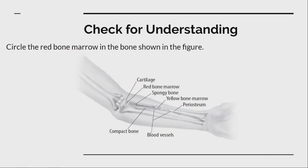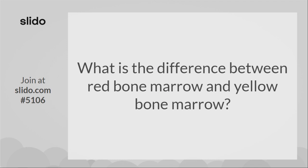This is in the packet — if you want to follow along, it's asking you to circle the red bone marrow and the yellow bone marrow so you can see where they are in the bone. If you're following along with Slido.com, the next question should pop up on your device: what is the difference between red bone marrow and yellow bone marrow? To recap: red bone marrow makes red blood cells, and yellow bone marrow stores fat.